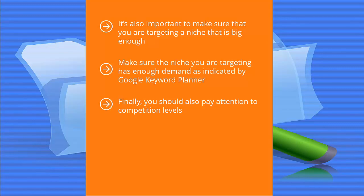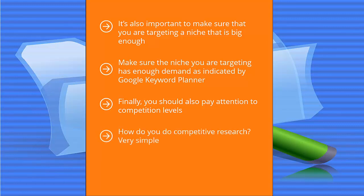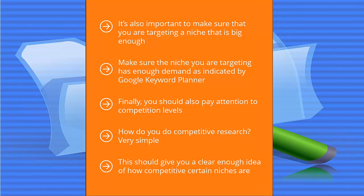You should also pay attention to competition levels. If you pick a niche that is extremely competitive with gigantic brands monopolizing pretty much all the search volume, you are probably going to have a tough time making inroads. Look for a niche that is somewhat competitive, but not so competitive that there is absolutely no space for newcomers. To do competitive research, get all the Google Keyword Planner keywords for the niches you are interested in and plug them one by one into Google's search box to see the number of pages competing for those keywords. At the end of this process, you should have a short list of niches with decent commercial appeal and enough monthly search volume.